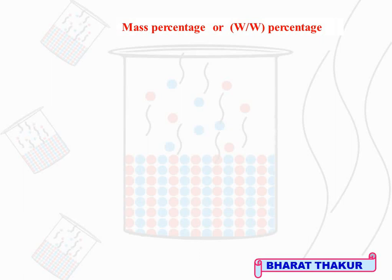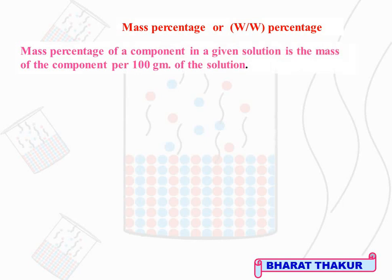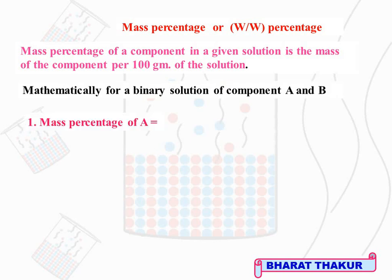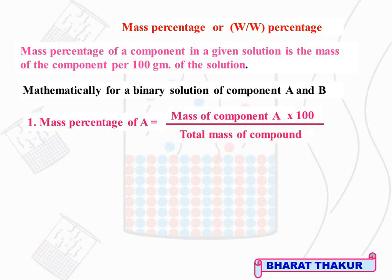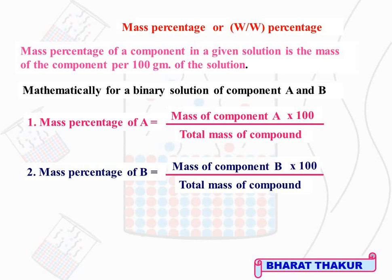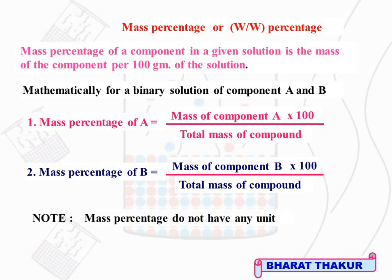Mass percentage, also called weight by weight percentage or mass by mass percentage, is defined as the mass of a component per 100 grams of solution. Mathematically, mass percentage of component A (solvent) equals mass of component A multiplied by 100 divided by total mass of solution. Mass percentage of component B (solute) equals mass of component B multiplied by 100 divided by total mass of solution. Note that mass percentage has no unit.